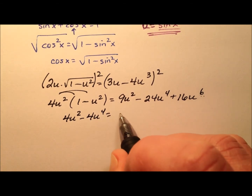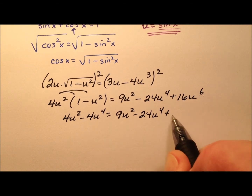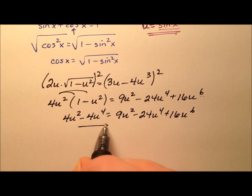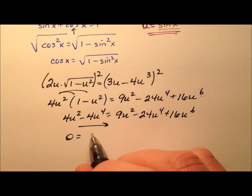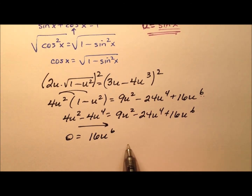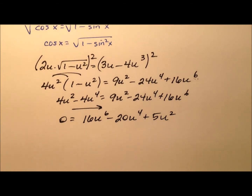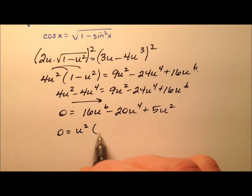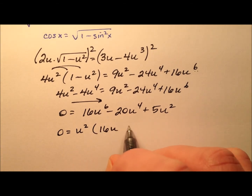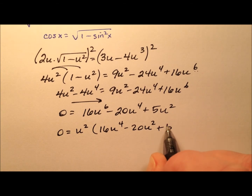After distributing and moving all terms to the right side set equal to zero, written in standard form: 16u to the sixth minus 20u to the fourth plus 5u squared equals 0. I notice the greatest common factor is u squared, so factoring that out gives: u squared times (16u to the fourth minus 20u squared plus 5) equals 0.